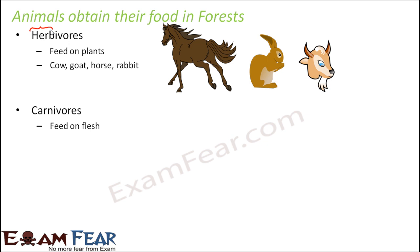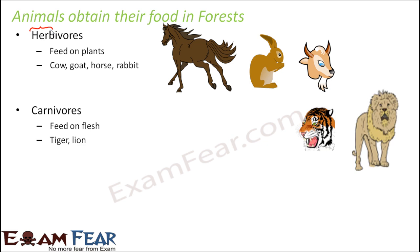We also have another set of animals which feed on flesh — they do not eat plants but eat other animals. These animals are more scary because they can eat other animals; in fact, animals like lions and tigers can even eat human beings, and that's why we are scared to go into a forest. Normally, these bigger carnivore animals live deep inside the forest. As you go deeper into the forest, there are chances you can see lions or tigers, which is why it is really not very safe to go deep inside a forest. These animals are called carnivores.